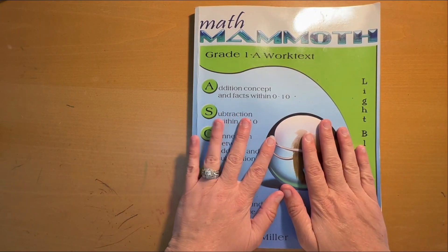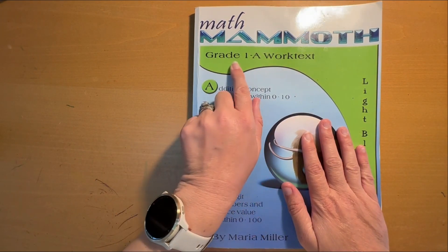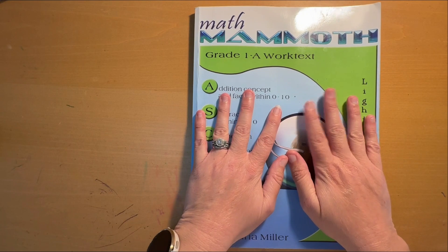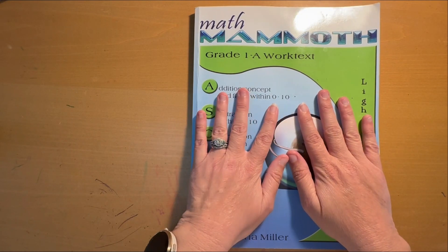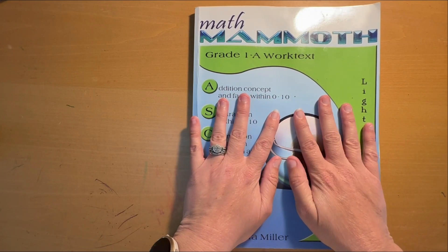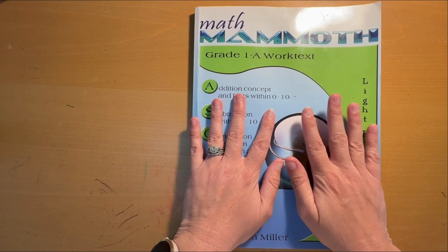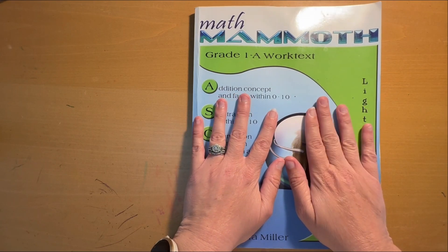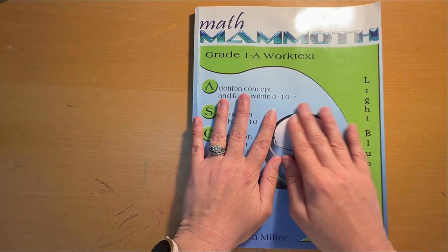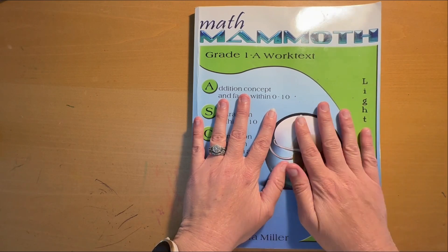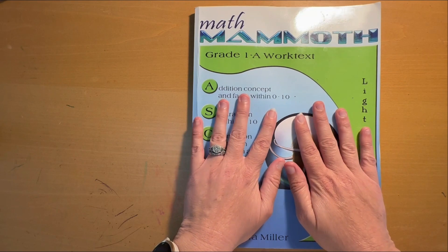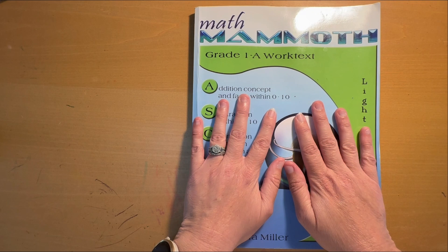Today I wanted to do a flip through of Math Mammoth grade one. They do not have a kindergarten level, so you can start at grade one. But they do advise that a kindergarten age child might not be ready because they jump quickly into things like missing addends, like two plus a blank equals three. Whether or not you can use this for kindergarten depends on your child.